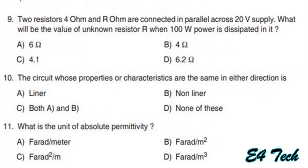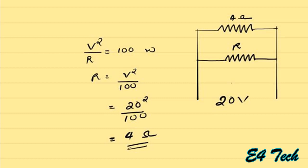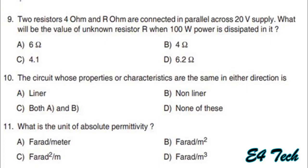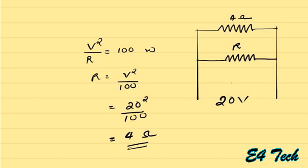Next: two resistors, 4 ohm and R ohm, are connected in parallel across a 20 volt supply. What will be the value of unknown resistor R when 100 watt power is dissipated in it? P = V²/R, so R = V²/P = 20²/100 = 400/100 = 4 ohms. Option B: 4 ohms.